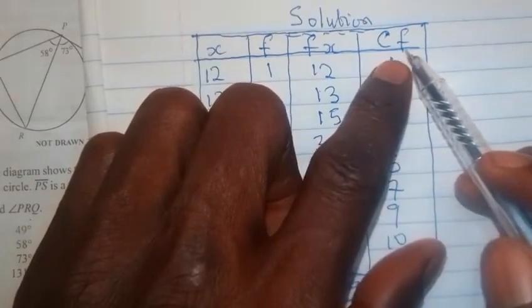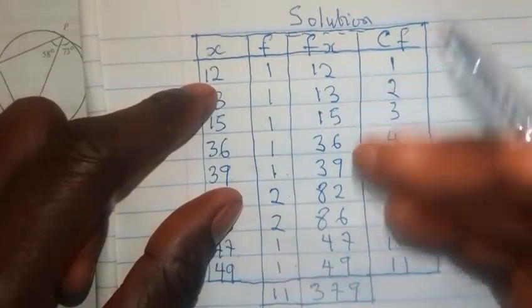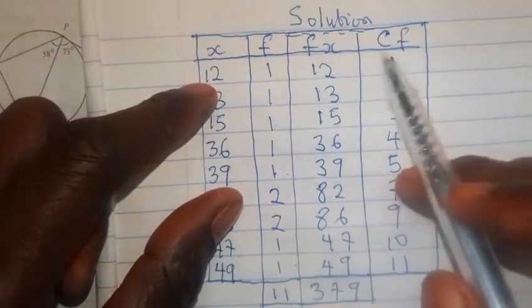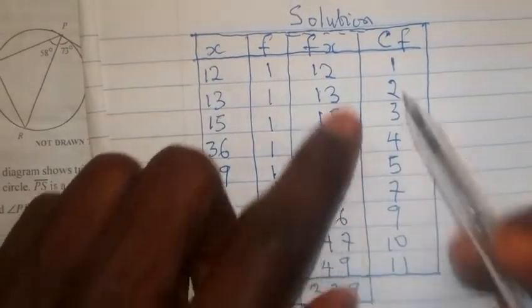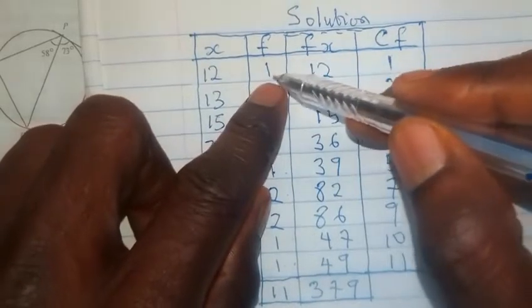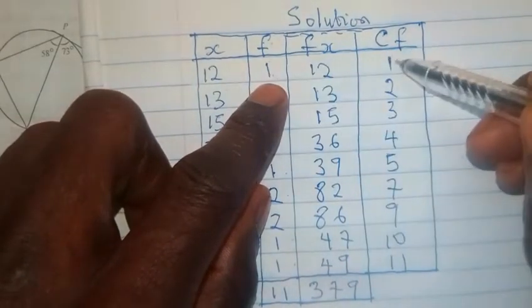The next thing we are going to get is the cumulative frequency. Why do we need the cumulative frequency? Because the question asks us to look for the lower quartile. And in order for us to get the lower quartile, we need the cumulative frequency. Now, how do we get all these values in the cumulative frequency? We got the CF from the F. How? Take a look at this first number 1. There is no number at the top. So, this 1 here will come here.